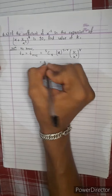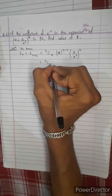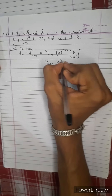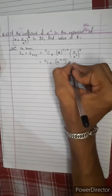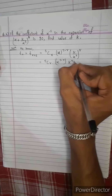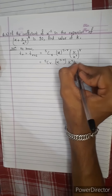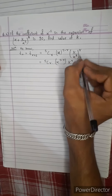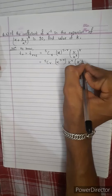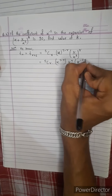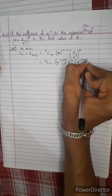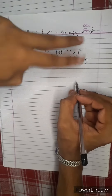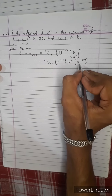Now, we can rearrange the rest. k minus r, k is equal to 2. x minus 2r. The test of the test is equal to 2.